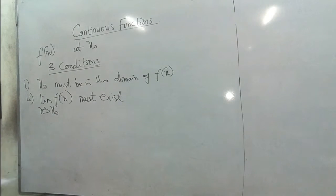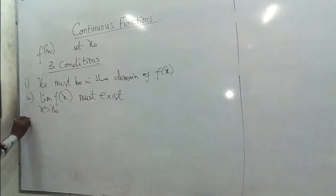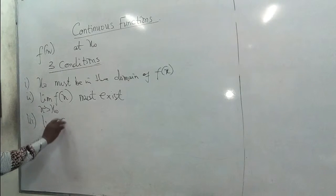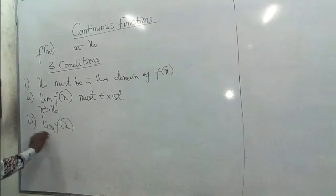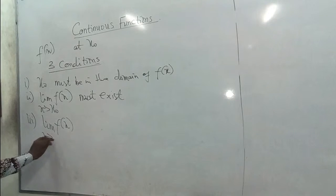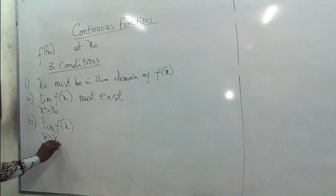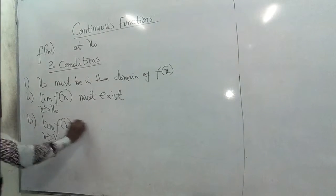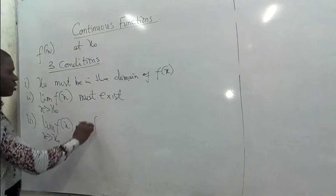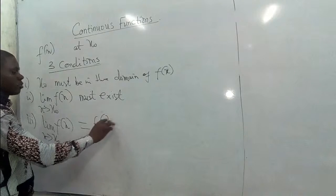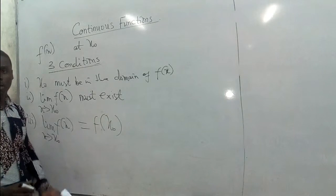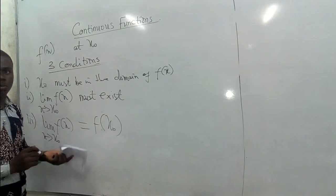The third and last condition is that the limit of F of x as x approaches x naught should be equal to the function value at x naught, that is, equal to F of x naught.